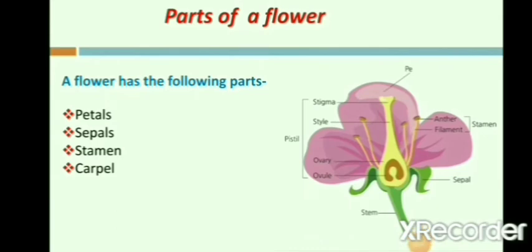Parts of a flower. Flowers are the most beautiful part of a plant. They are responsible for the birth of young new plants from the old plant. A flower has the following parts: petals, sepals, stamen and carpel.